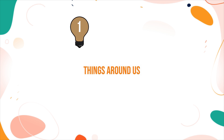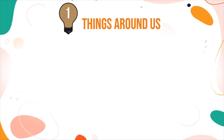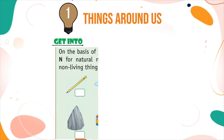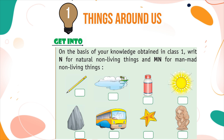Chapter 1: Things Around Us. Get A2. On the basis of your knowledge obtained in class 1, write N for natural non-living things and MN for man-made non-living things.